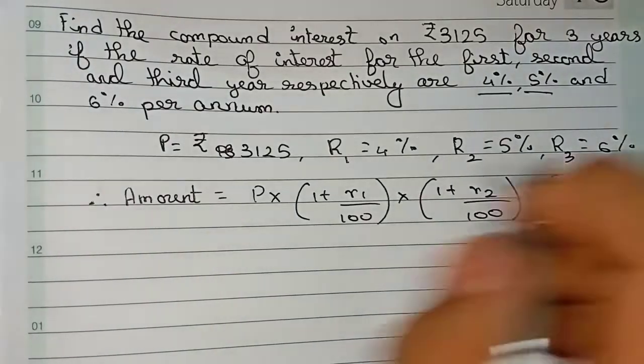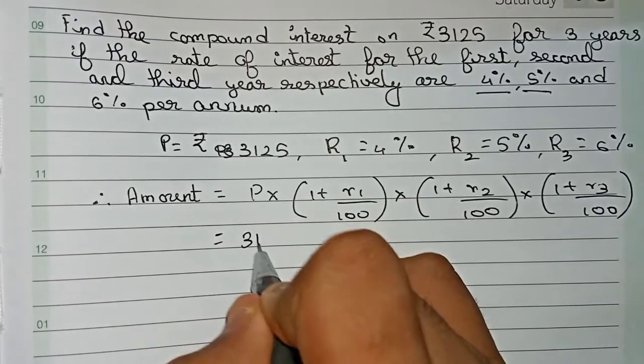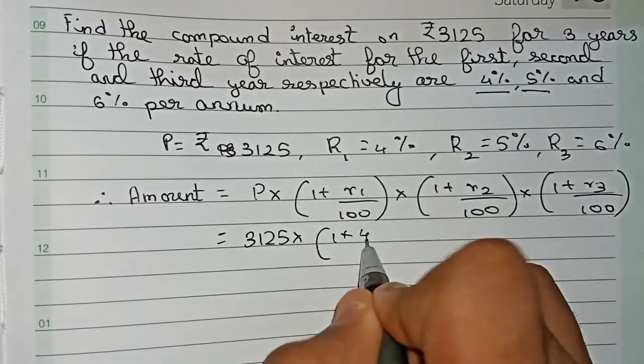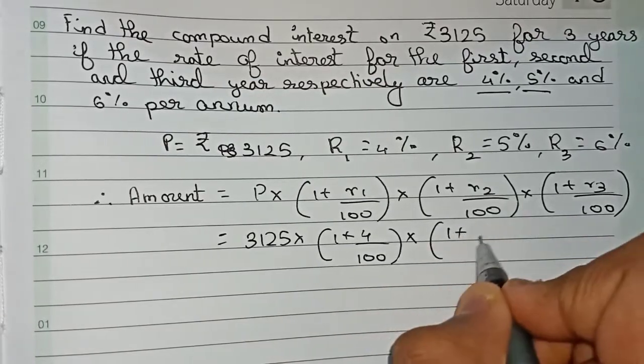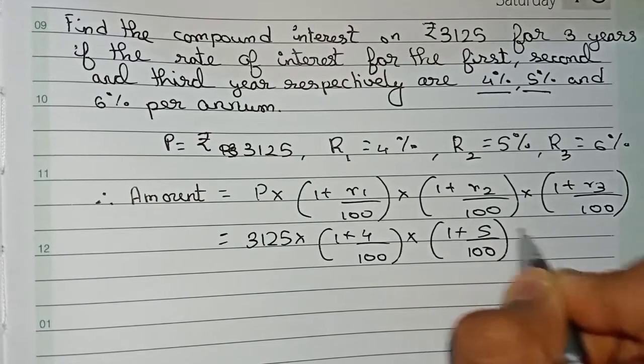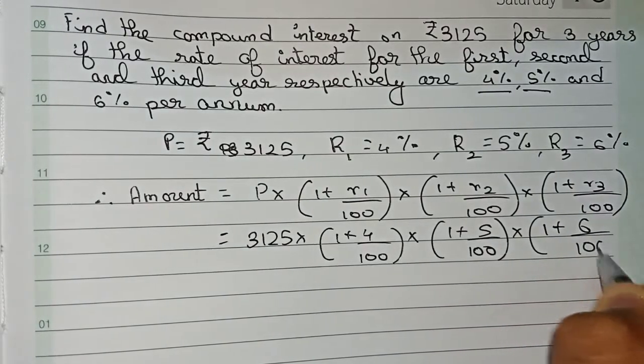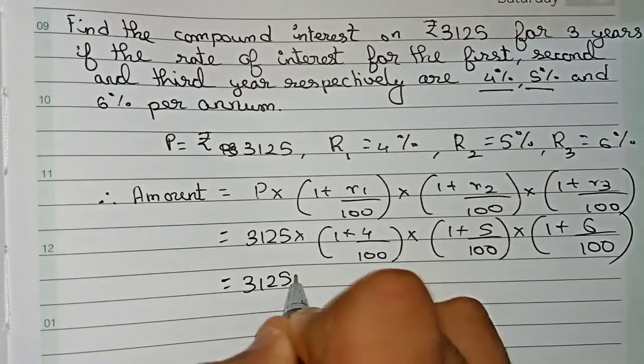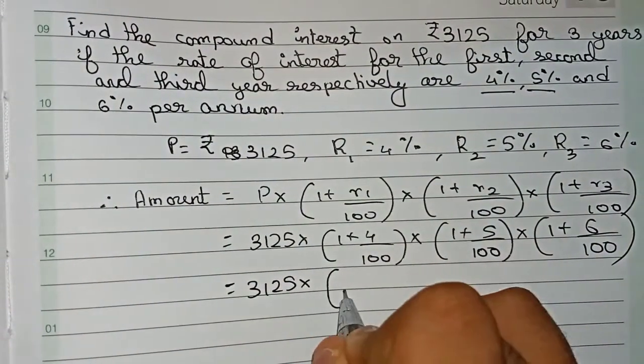If we solve by this formula, we will get the amount. Principal is 3125 into (1 plus 4 by 100) into (1 plus 5 by 100) and finally (1 plus 6 by 100). This equals 3125.